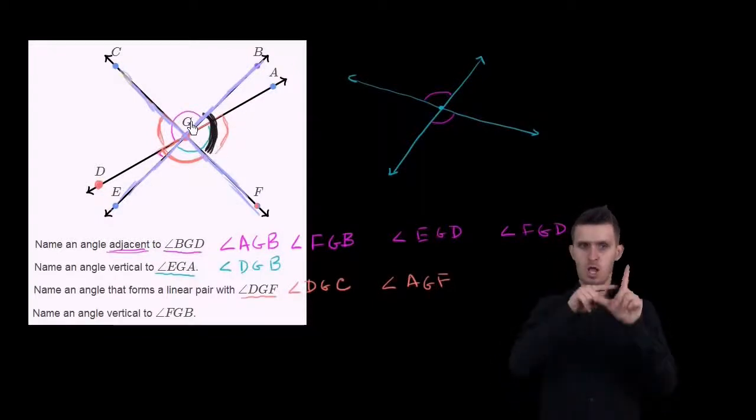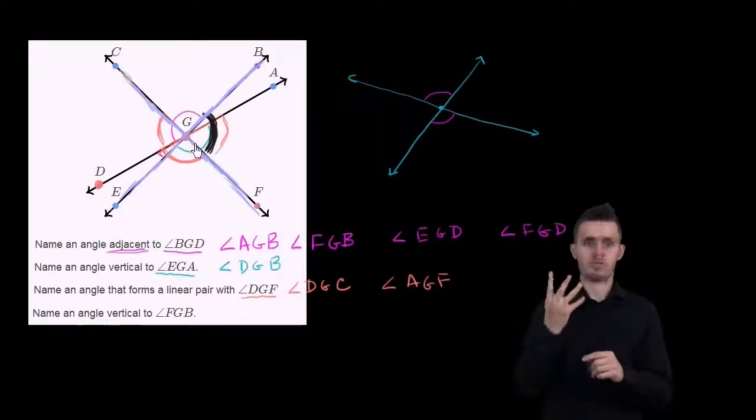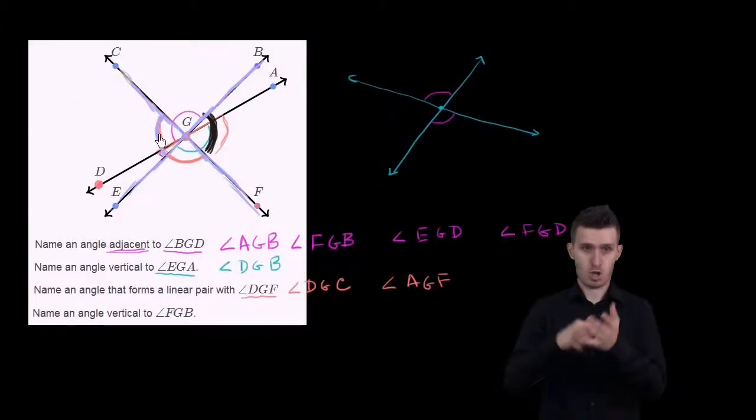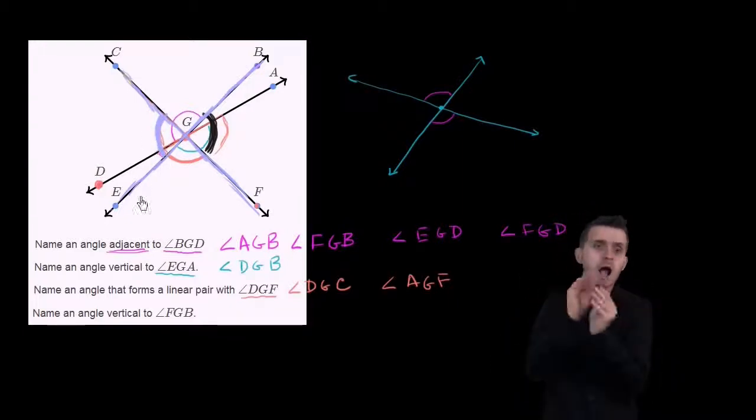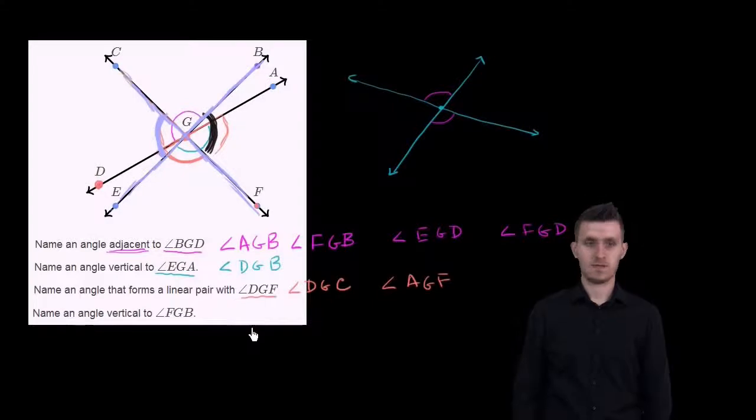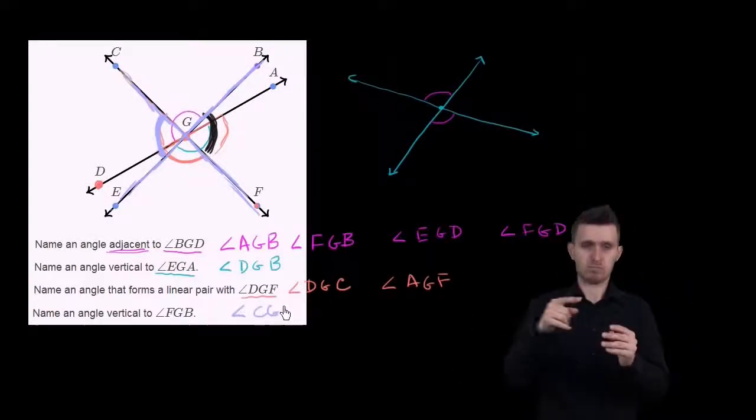Four angles are formed. The one in question is FGB. These two angles are adjacent to it and share a common ray. And then the vertical angle is the one that sits on the opposite side - this angle right over here, which is angle EGC, or you could also call it angle CGE.